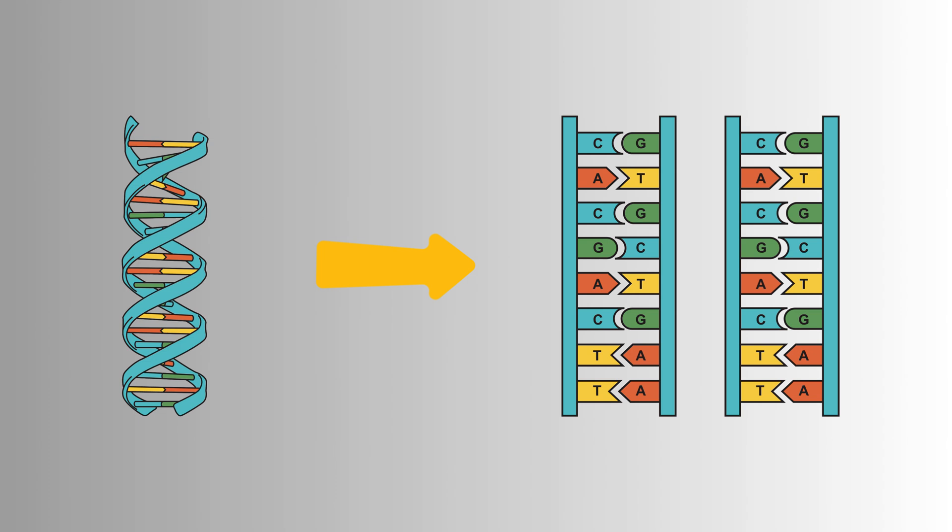This is because A always pairs with T and G only pairs with C. Thanks to this complementary base pairing, DNA can be accurately copied and transcribed, ensuring that genetic information is faithfully passed on from one generation to the next.